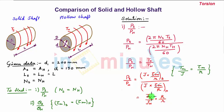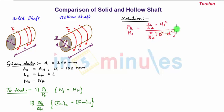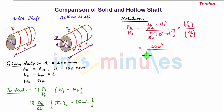Substituting the formula for polar moment of inertia J, we have PS/PH = [π/32 × D1⁴] / [π/32 × (D⁴ − d⁴)] × (D/2) / (d1/2). Plugging in the diameter values: D1 = 200 mm, D = 250 mm, d = 150 mm, so numerator uses 200⁴, denominator uses (250⁴ − 150⁴), multiplied by 250/2 divided by 200/2.